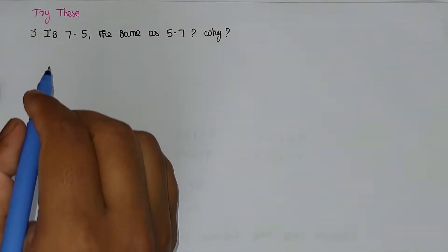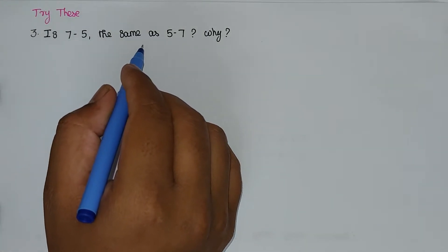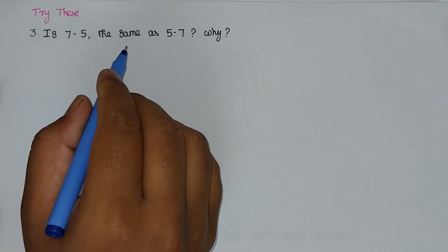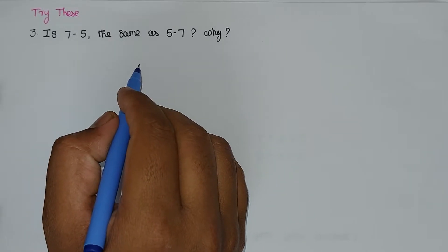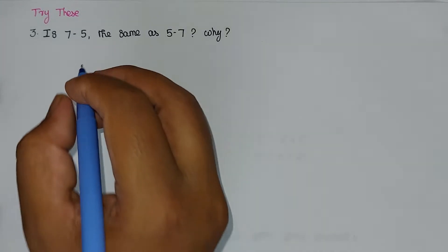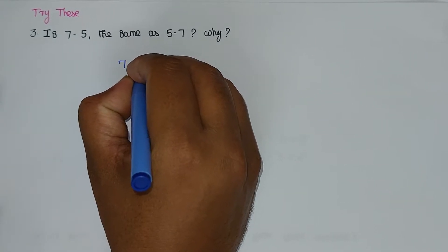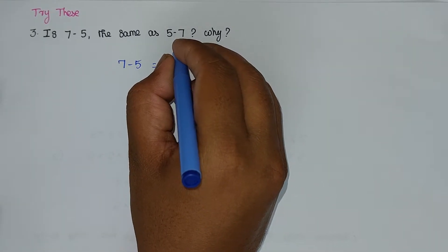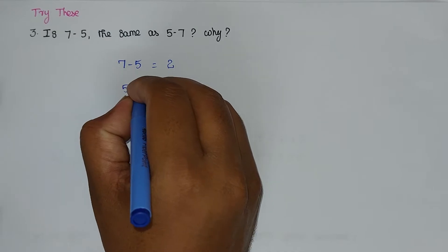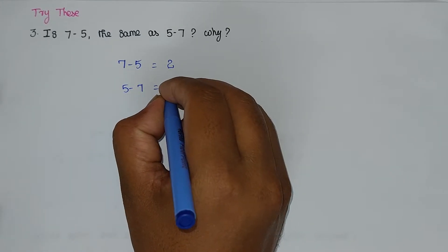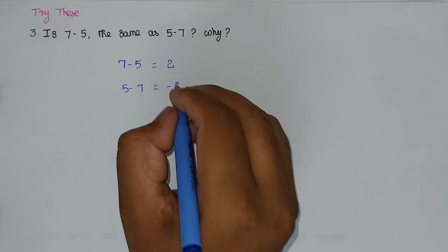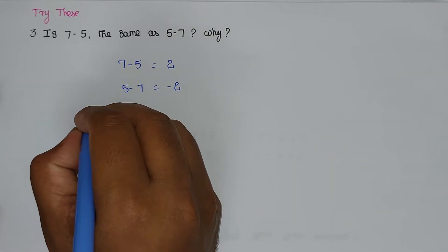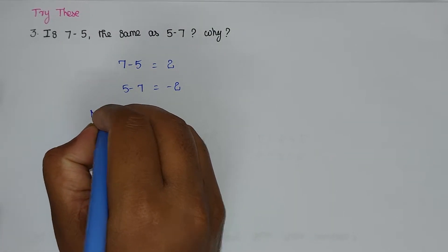Problem number 3. Is 7 minus 5 the same as 5 minus 7? The value of 7 minus 5 is 2. The value of 5 minus 7 is minus 2. Here we get 2 and here we get minus 2, so both are not the same. Answer: not same.